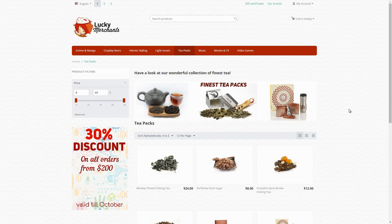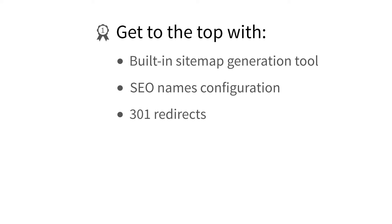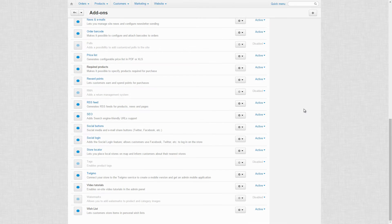CSCard will help you get to the top with such instruments as the built-in sitemap generation tool, CO names configuration, 301 redirects, rich snippets and page meta information editing. Let's have a closer look at them.